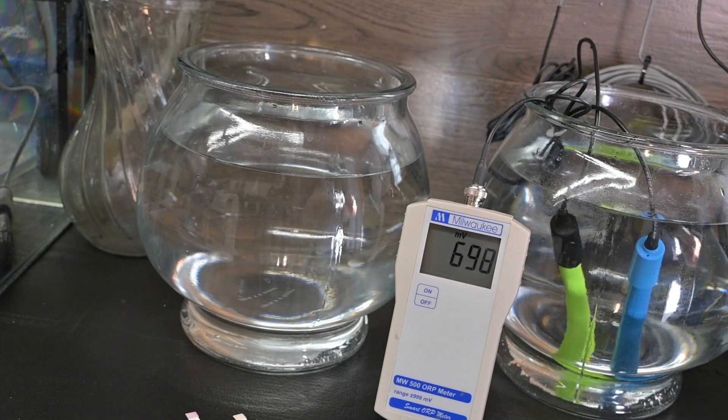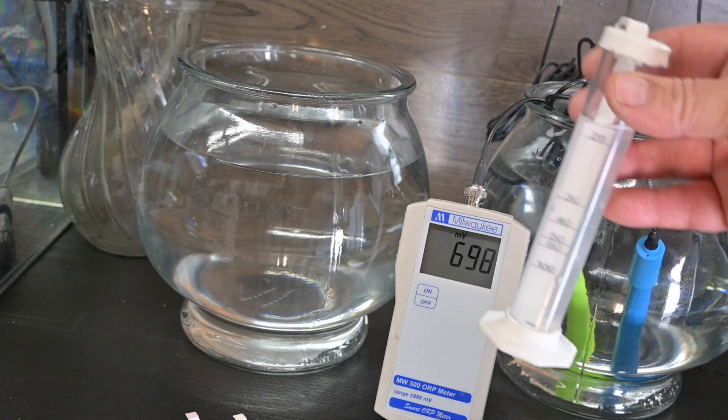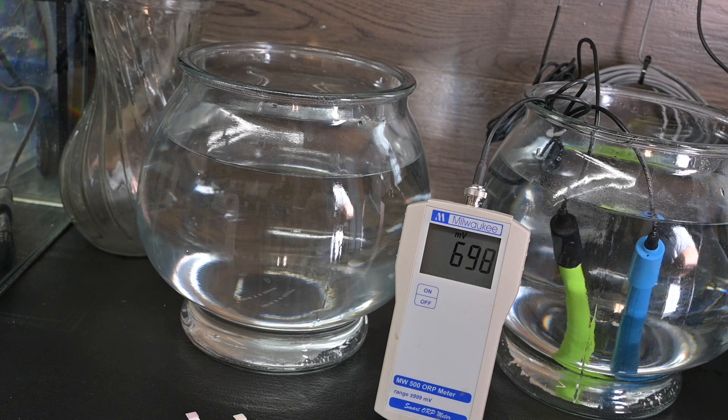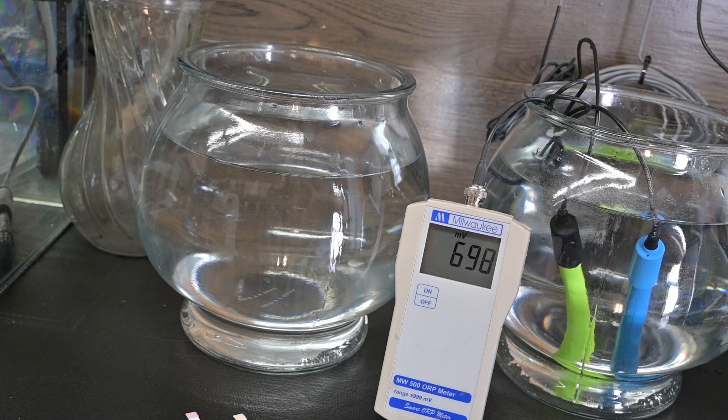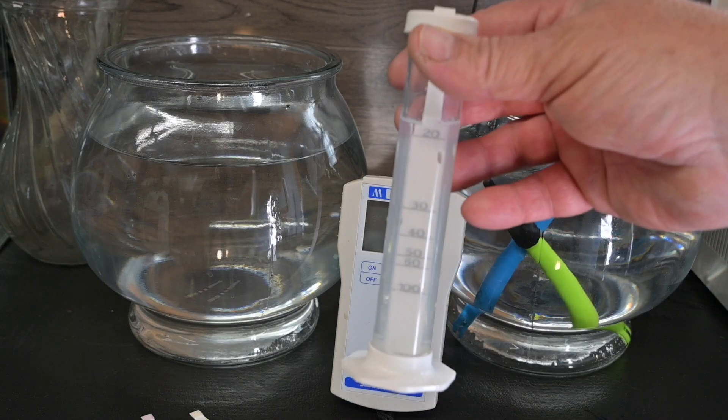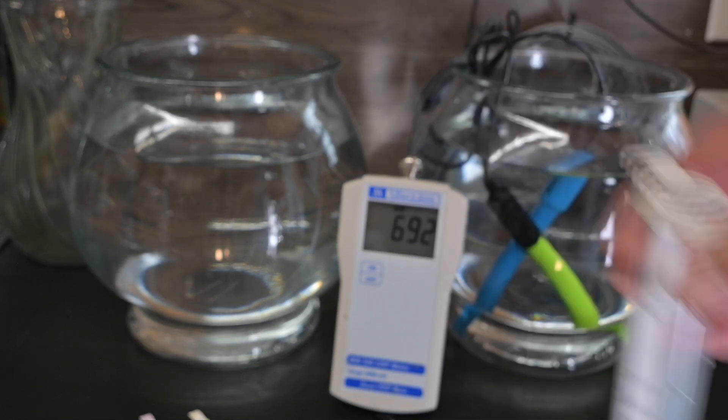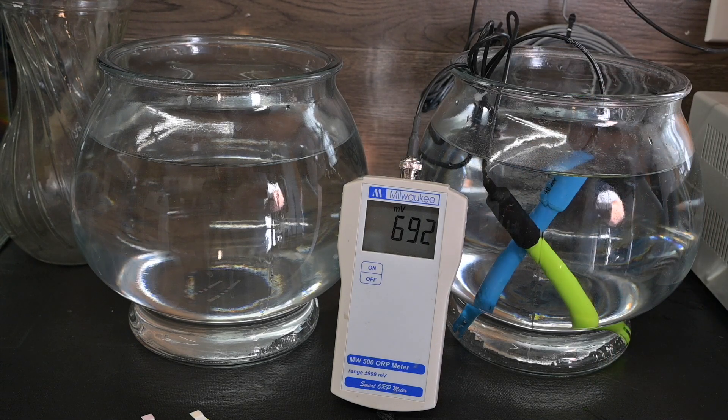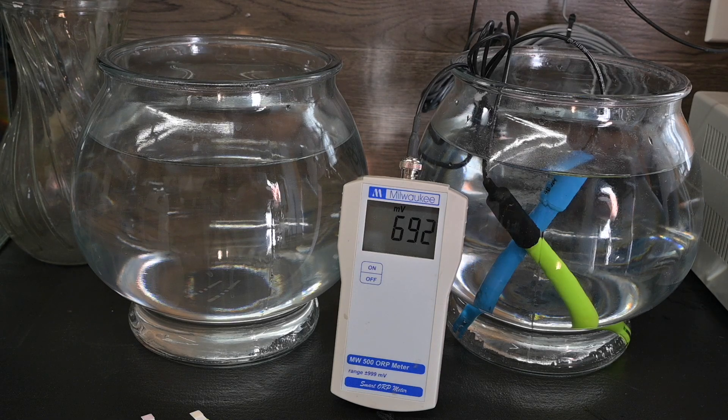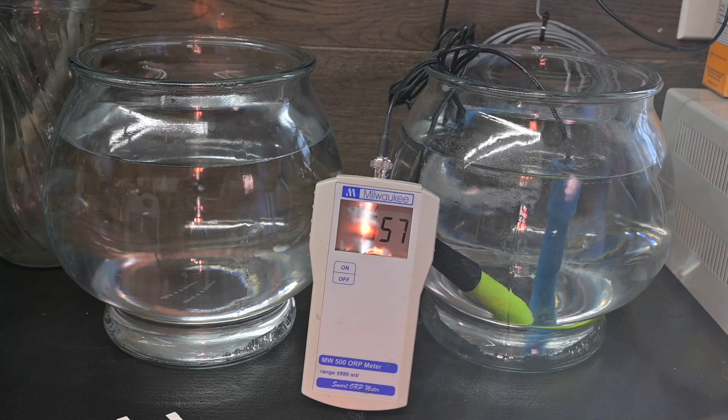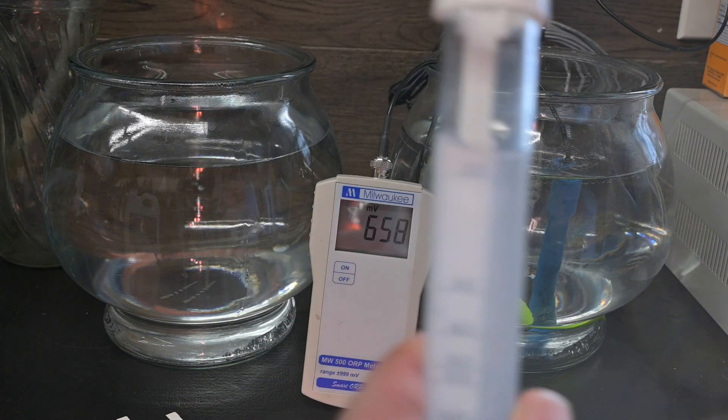We've stabilized a little bit - we're at 719 and we are at 20 parts per million of stabilizer. Now at 30 parts per million of cyanuric acid we've dropped down to 698 on our ORP. At 40 parts per million cyanuric acid we haven't dropped a whole lot this time but we're at 692 millivolts.